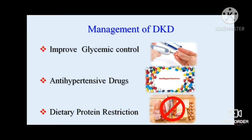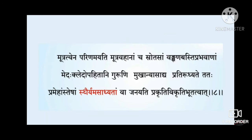The most used antihypertensive drugs are ACE inhibitors, ARBs, with add-on diuretics. For dietary management, protein should be restricted to 0.4–0.5 grams per kg per day, and sodium intake should be reduced to 2 grams per day.